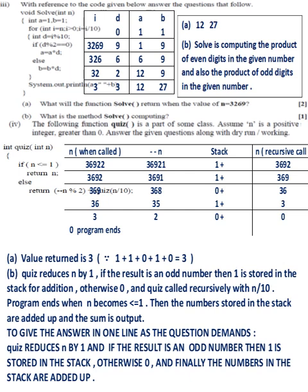Part 4: The working has been shown. Answers: A, value returned is 3. B: quiz reduces n by 1. If the result is an odd number, then 1 is stored in the stack for addition, otherwise 0. Quiz is called recursively with n divided by 10. Program ends when n becomes less than or equal to 1. Then the numbers stored in the stack are added up and the sum is output.